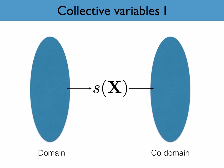Let's look at this process in a slightly different way. In this figure we have a schematic illustration of the domain, the set of atomic configurations that the system can adopt and the codomain, the set of values that the collective variable can have for our collective variable function. Every point in the domain, every configuration the system can adopt maps onto a point in the codomain a value for the collective variable.